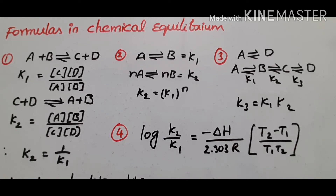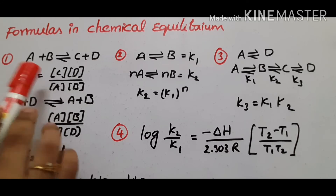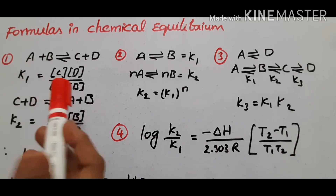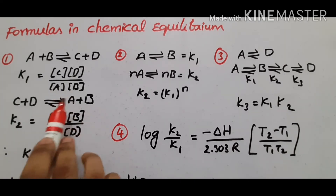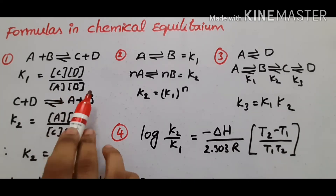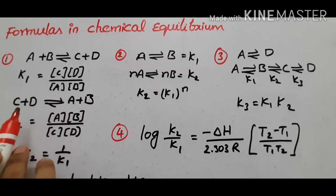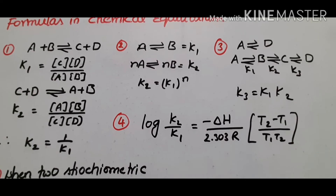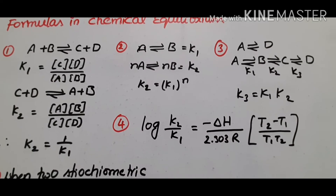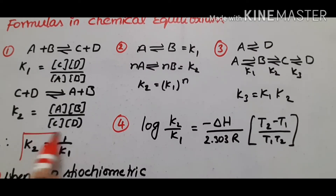The first formula is, if you have a reaction where A and B are reactants and C and D are products, the equilibrium constant is concentrations of products divided by reactants. For a reversible reaction, the first relation is Kc equal to 1 by K1.